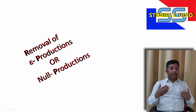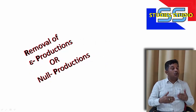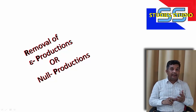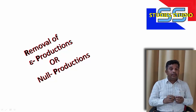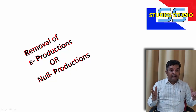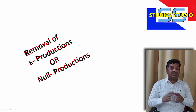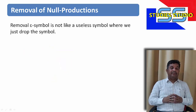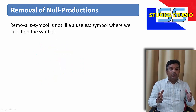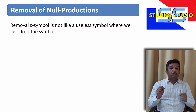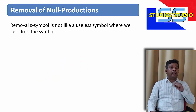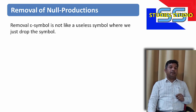In our previous videos we have seen what is a grammar, what is a context-free grammar, what is an ambiguous grammar, and we have learned how to remove a useless symbol. In this video we are going to learn how to remove an epsilon production or a null production.